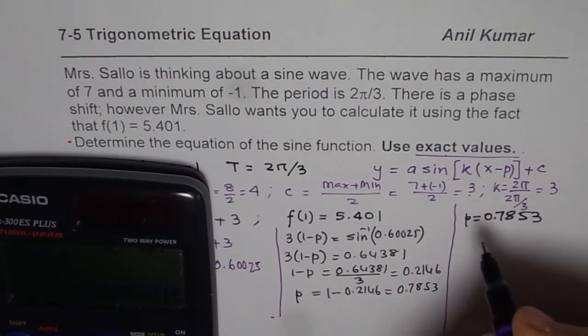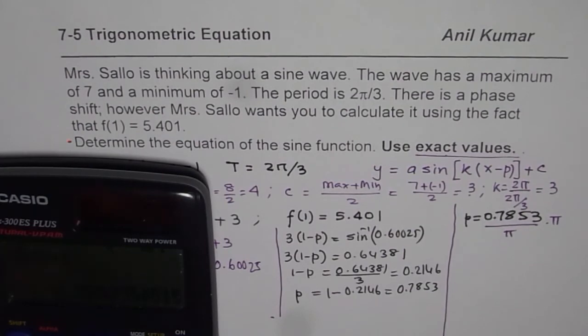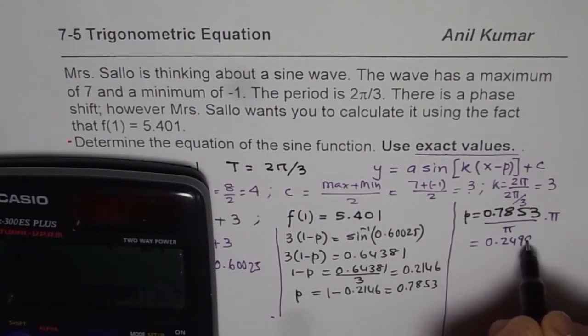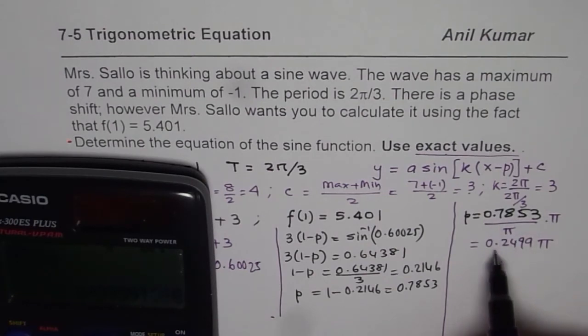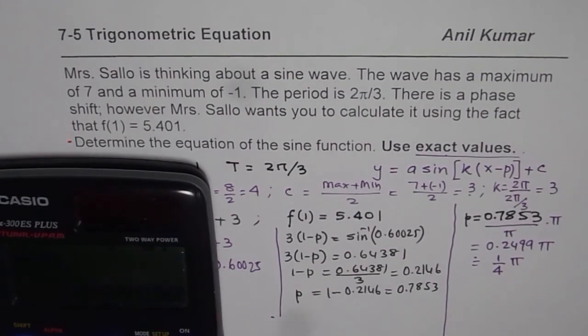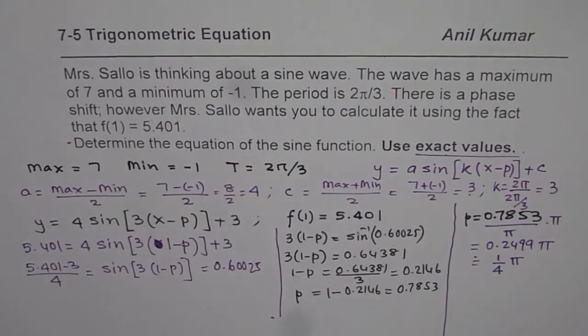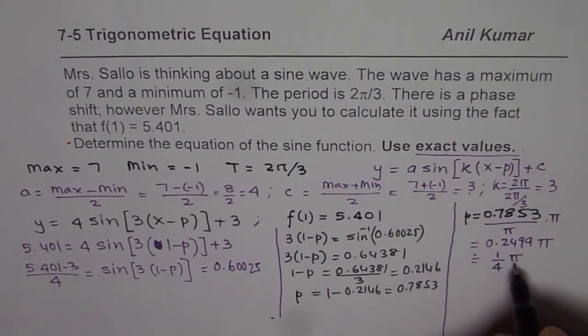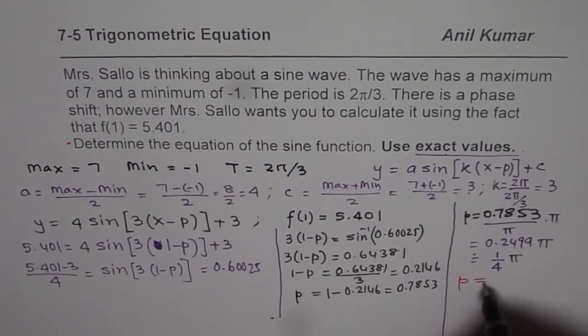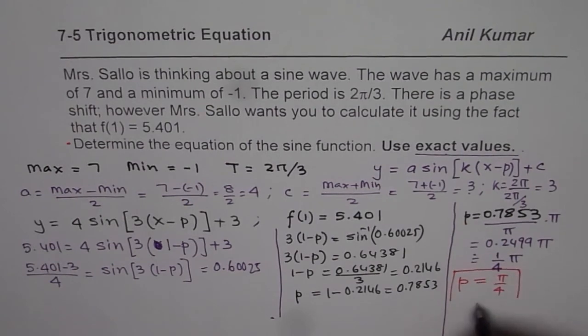The idea here is to write this as an exact value. What we can do is we can divide this by π and then multiply by π. Do you get the point? So when I divide this by π, I get 0.2499π. Do you get the idea? Now, 0.25 is kind of a quarter. It is approximately 1 over 4. So if I want to convert that into fraction, then very closely it is quarter. 0.25 is quarter. So I can write p as quarter of a π. That is what I wanted to share with you. So what I get here is p = π/4.